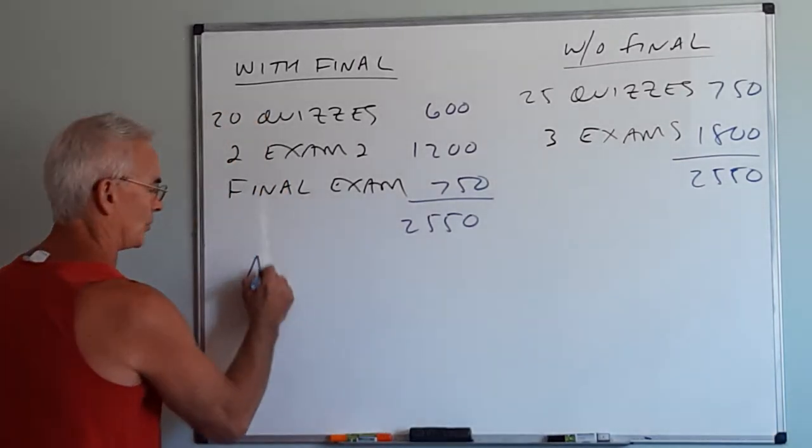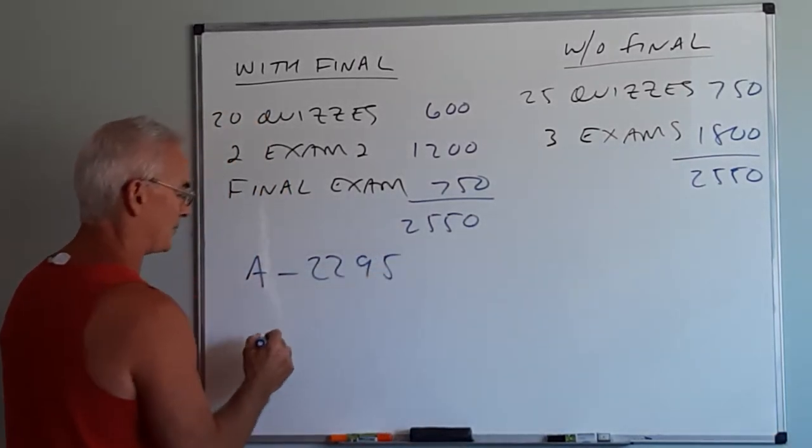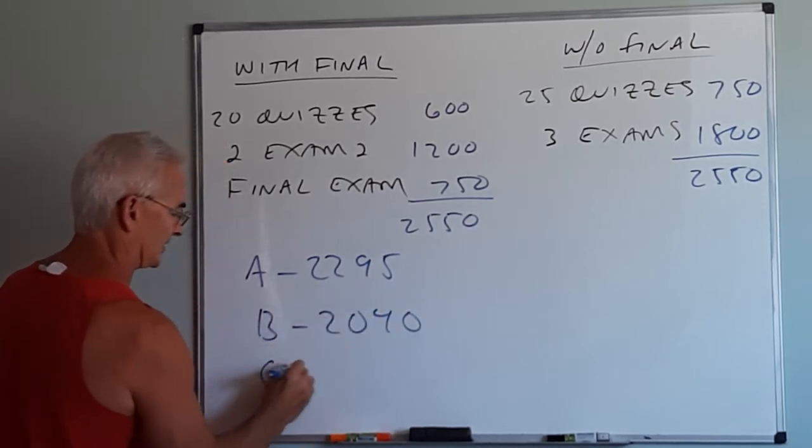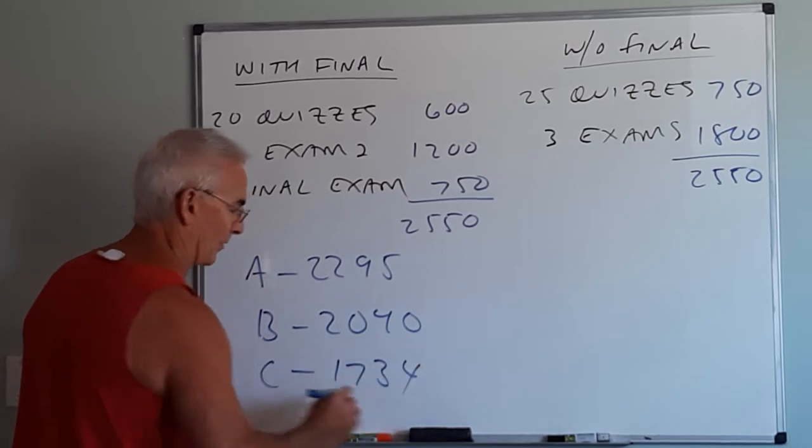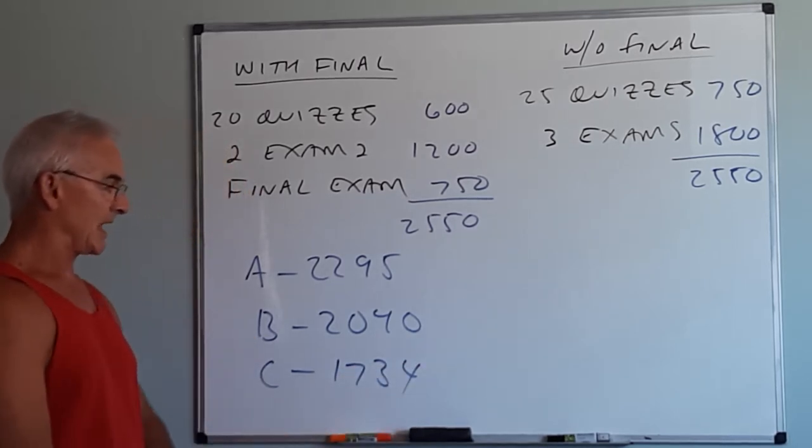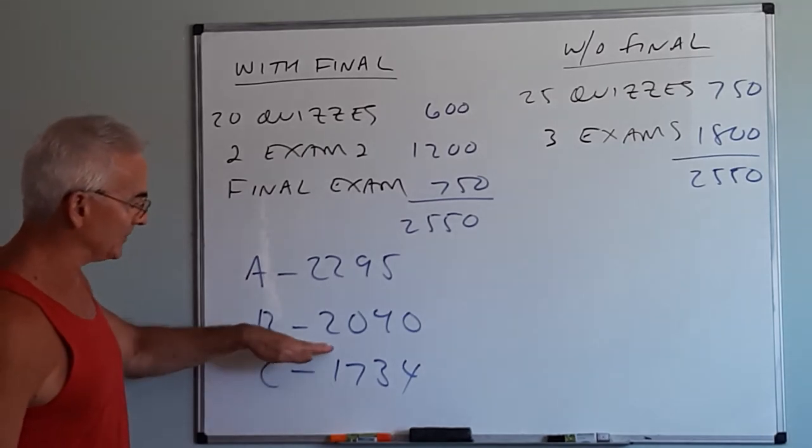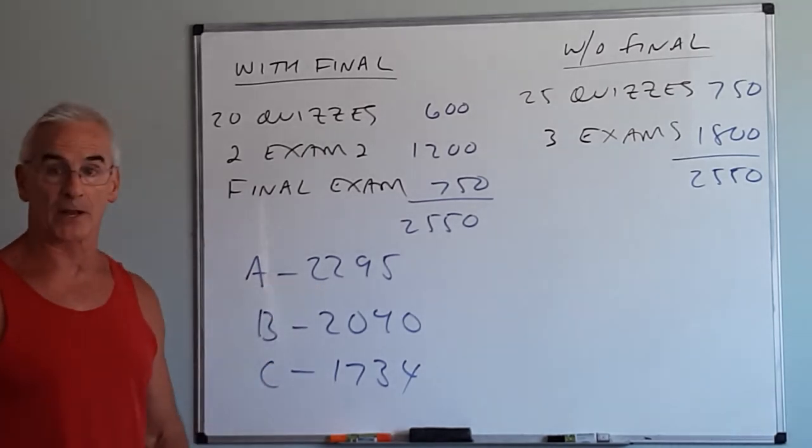Now the threshold for an A is 2,295 points. For a B is 2,040. For a C is 1,734. This is clearly stated in the syllabus. After Wednesday's exam if you have reached any of these thresholds in your total you have guaranteed that grade.